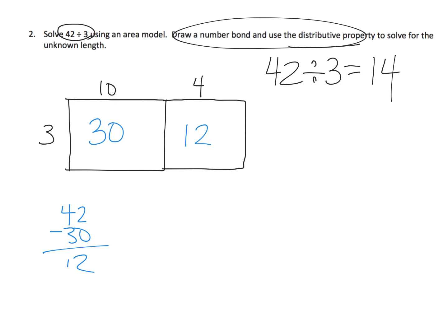Now they want us to use a number bond. So let's do that. So 42, we break it up into two sections, 30 and 12. Now 30 divided by 3 gives us 10. And then right here, 12 divided by 3 gives us 4. And now our answer is 10 plus 4 is 14.